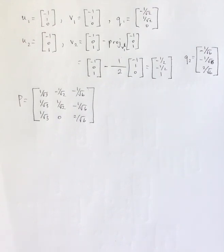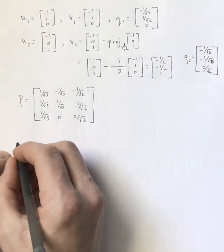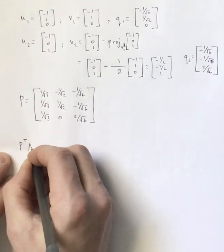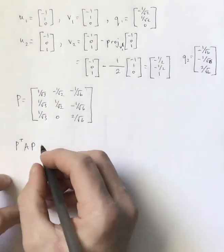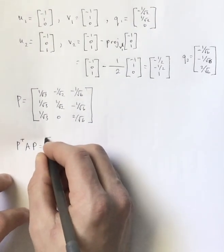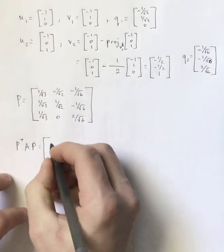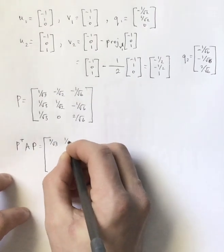Now, to convince you that that did work, let's go ahead and find P transpose AP. You know, normally we would say P inverse AP, but because we have found an orthogonal matrix, P transpose and P inverse are the same matrix. And in fact, transposing a matrix in general is much easier to do than to find the inverse of that matrix. So I'm going to show you that what I get is, in fact, what I would expect to get.